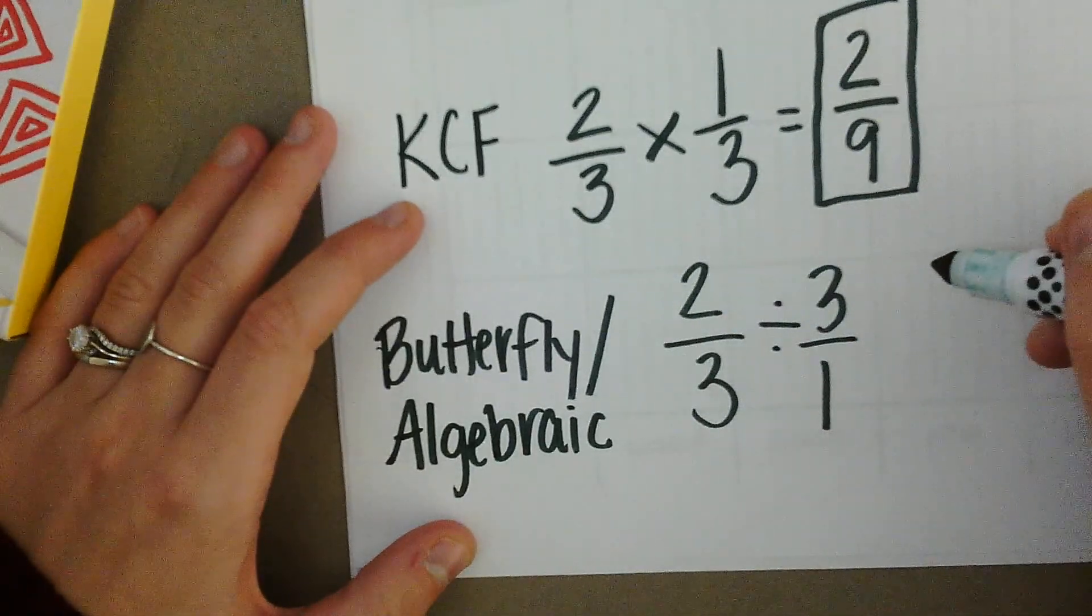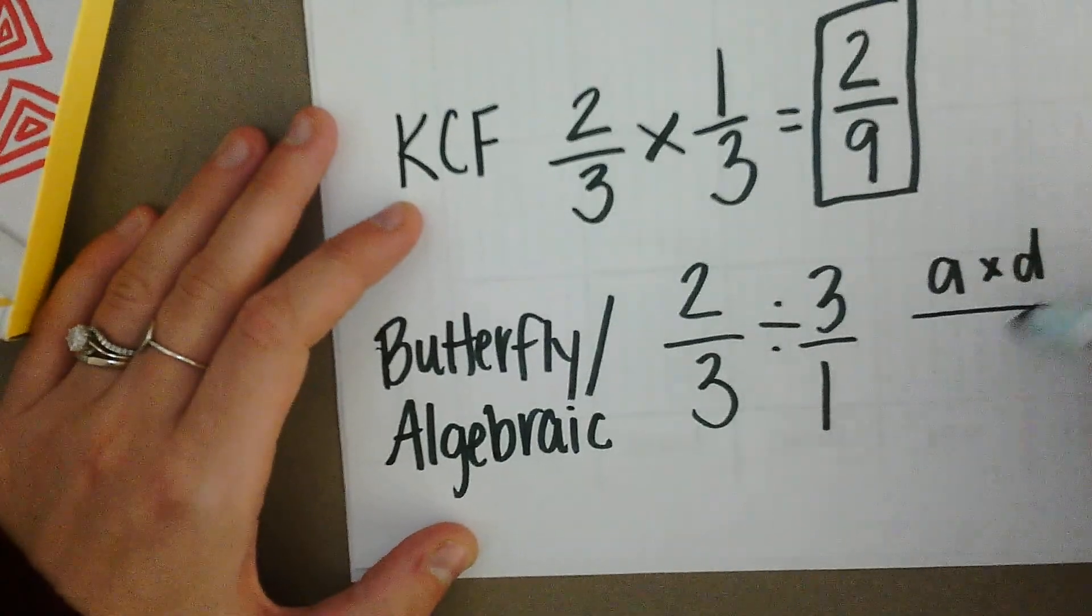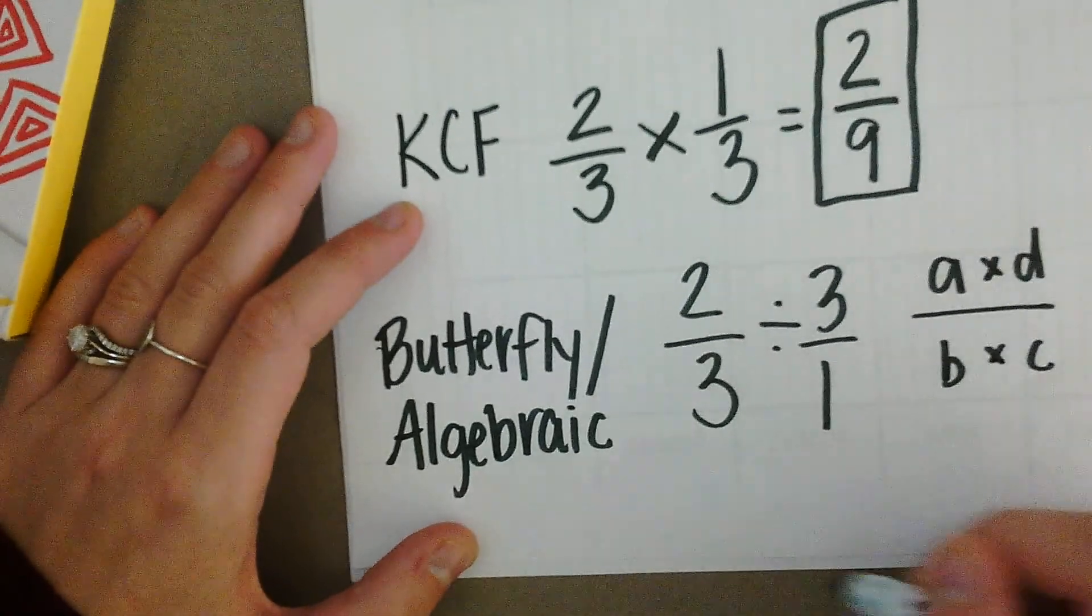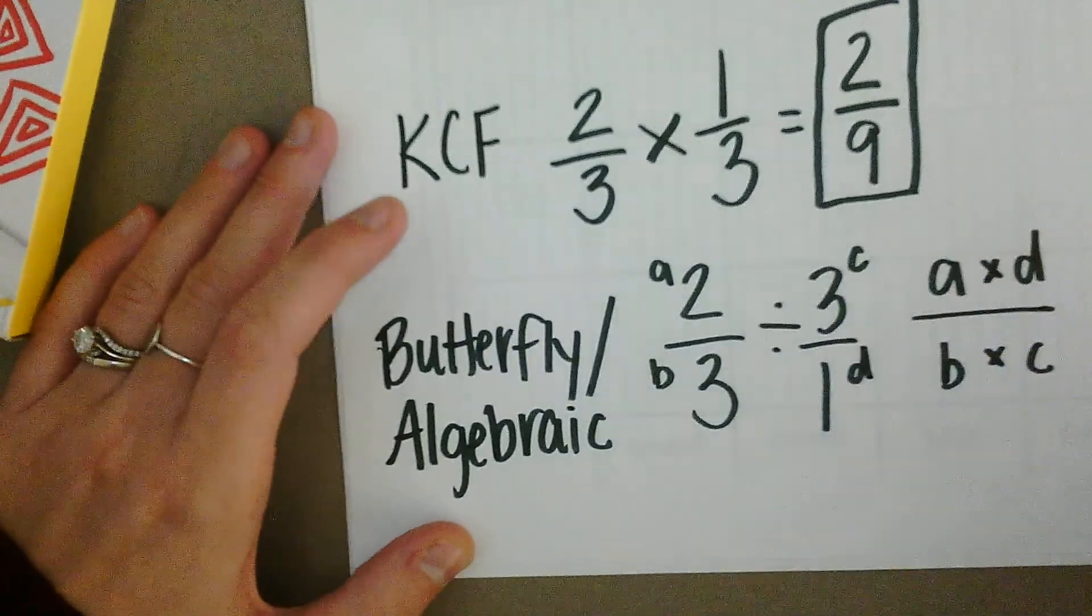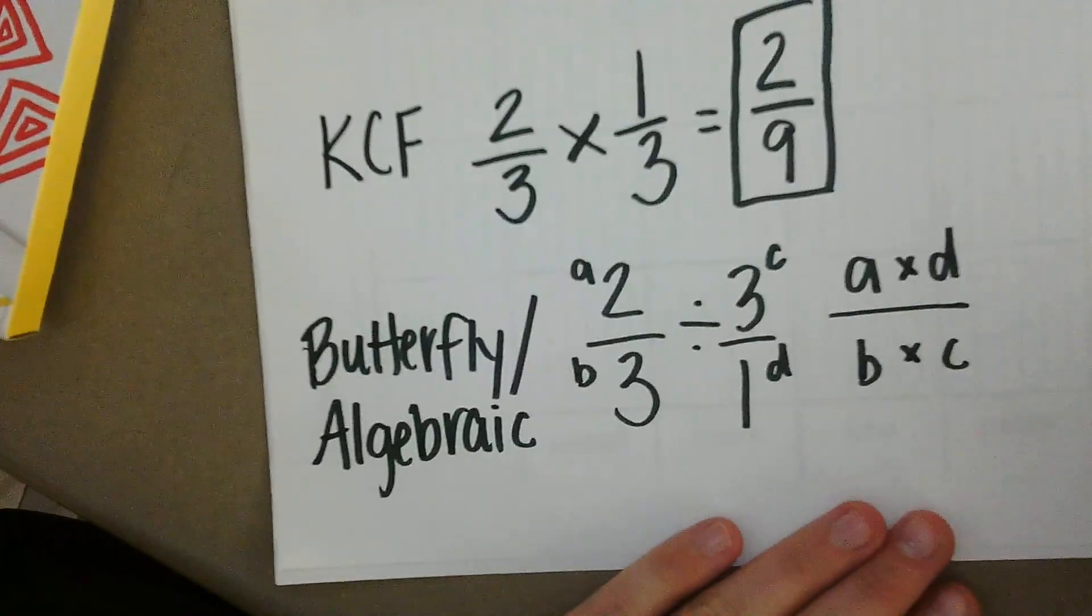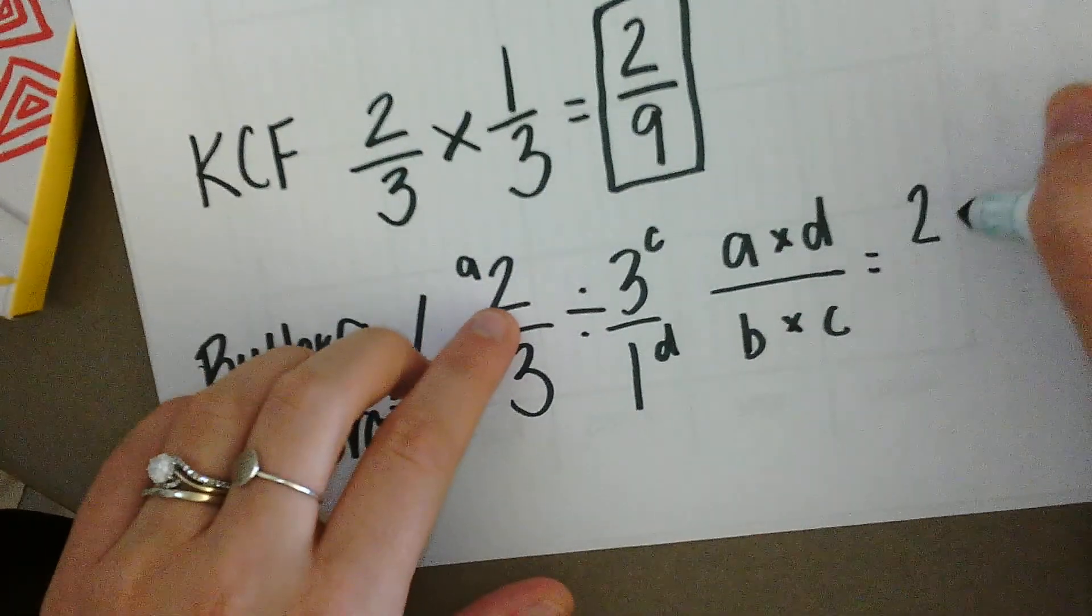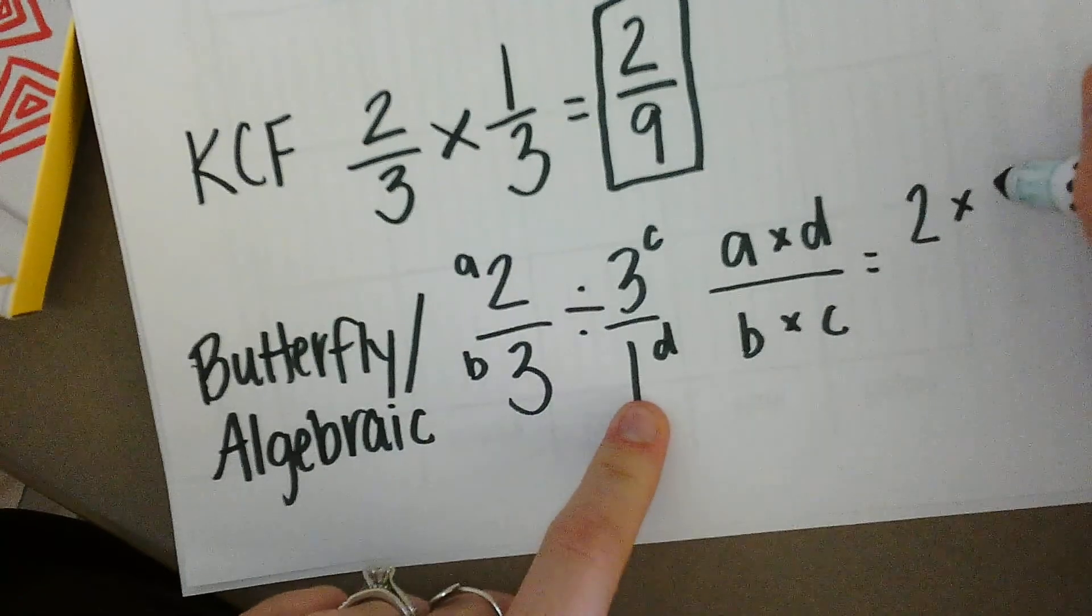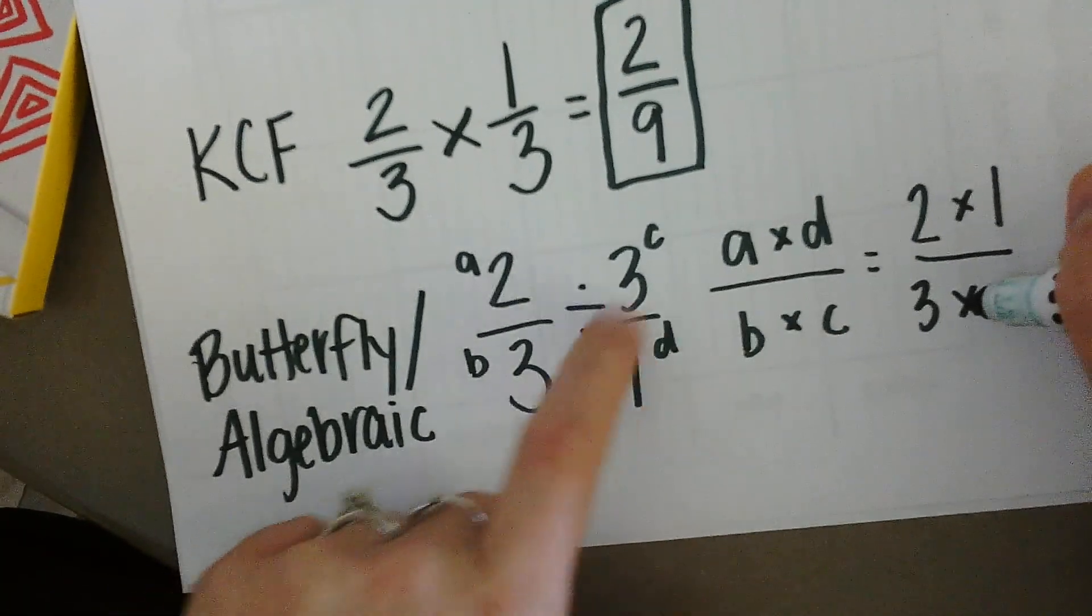With the butterfly and algebraic way, you multiply a times d over b times c. A spot, b, c, d. So you're plugging in your numbers for these variables. We're plugging in two times one over three times three.